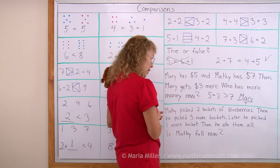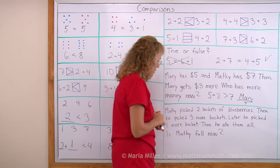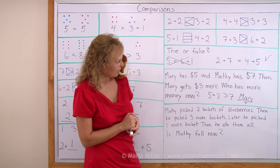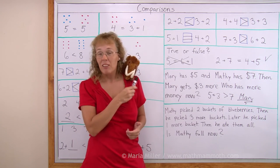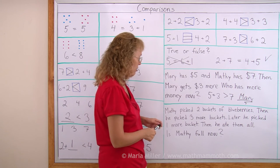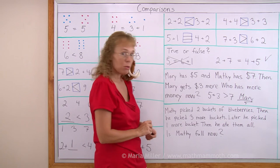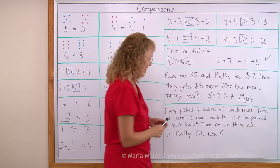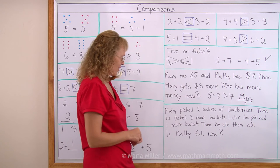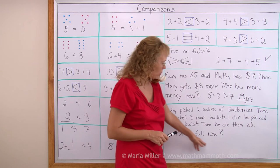Matthew picked 2 buckets of blueberries. You like blueberries, don't you? Right. He loves blueberries. Then he picked 3 more buckets. Oh my. Later he picked 1 more bucket. Who wrote this word problem? Matthew? Then he ate them all. Well. Is Matthew full now?